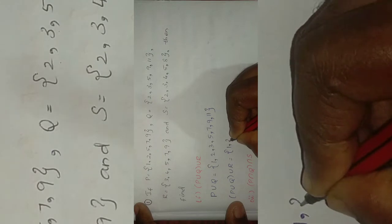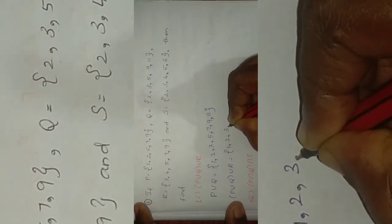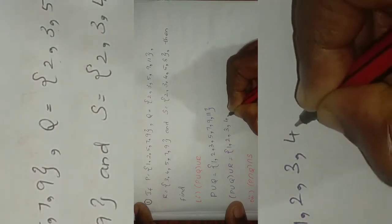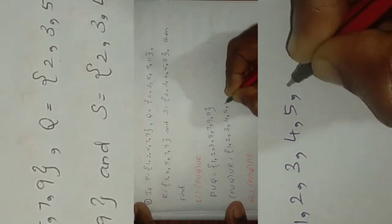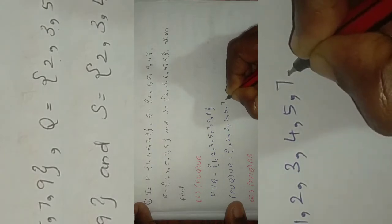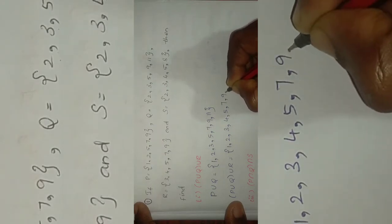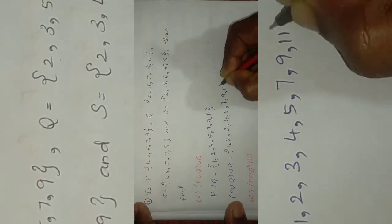P union R equals the set {1, 2, 3, 4, 5, 7, 9, 11}.